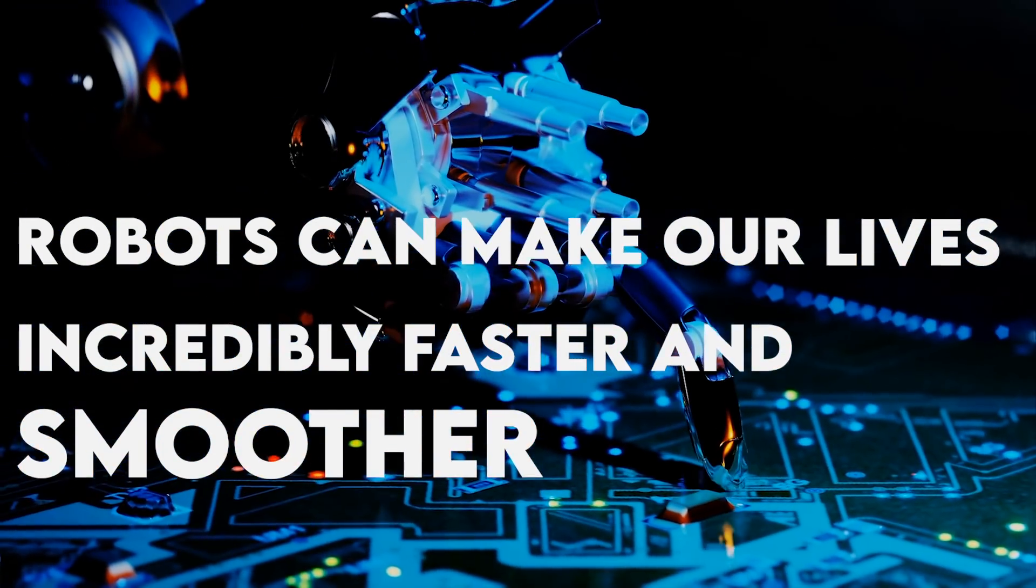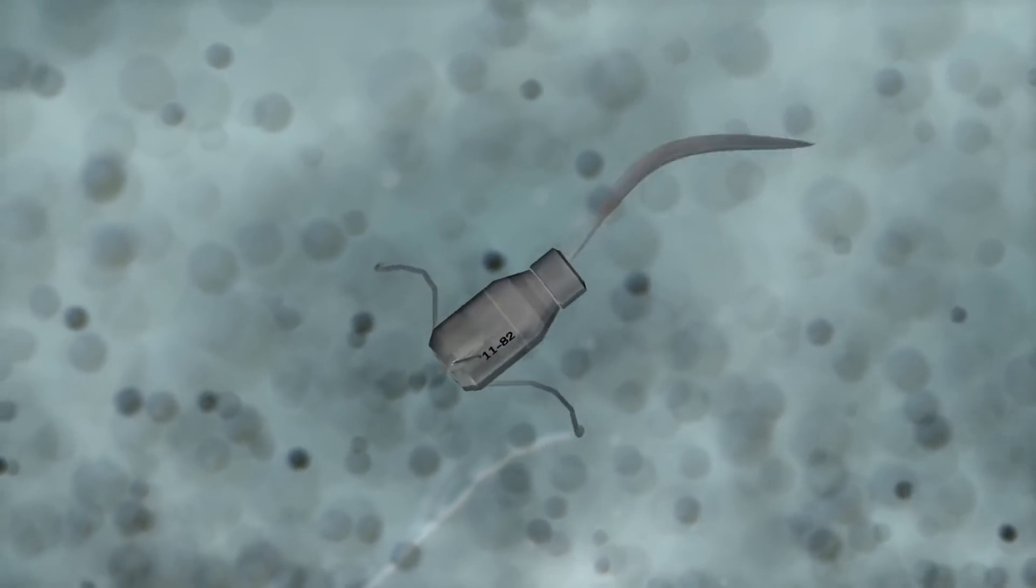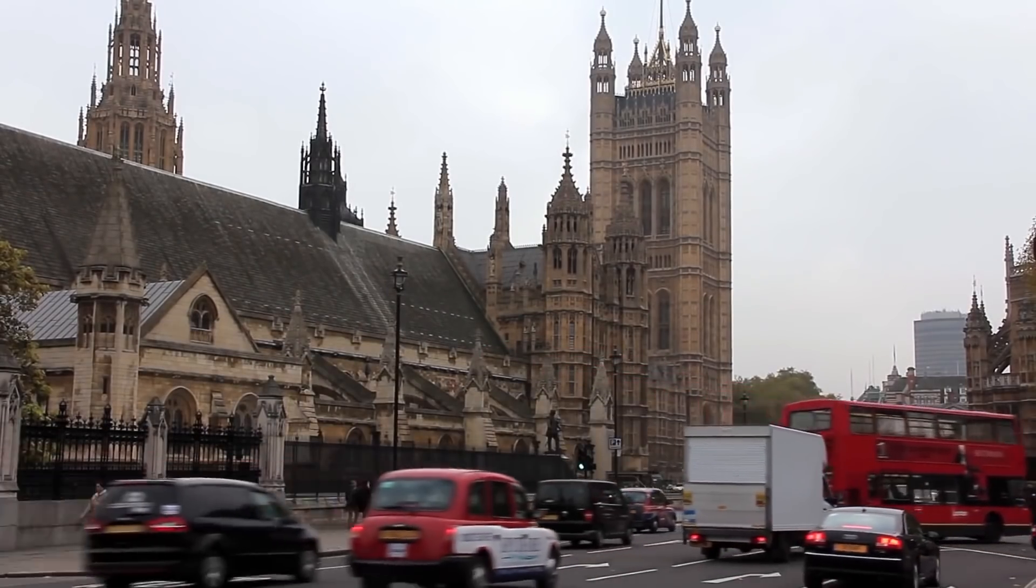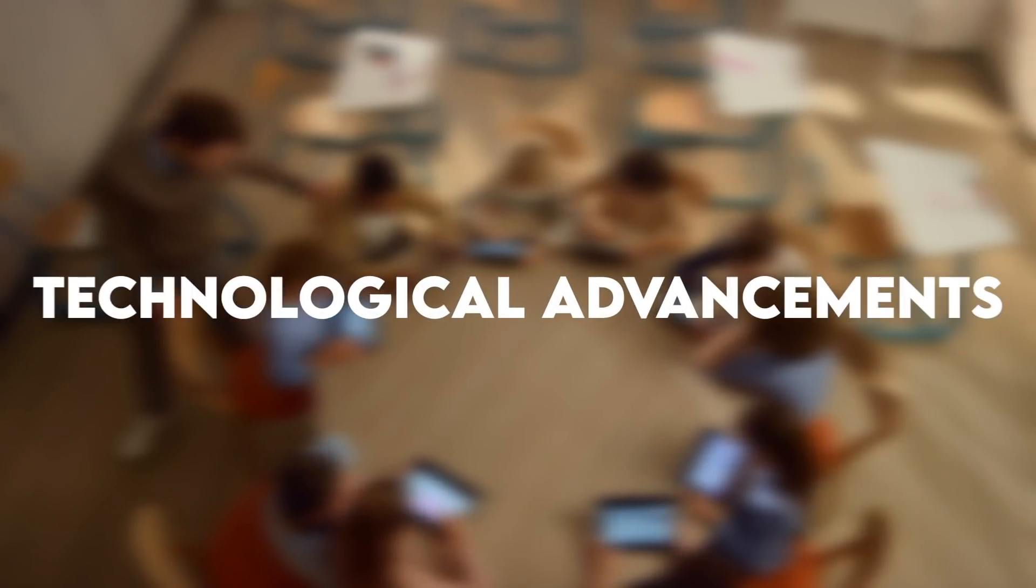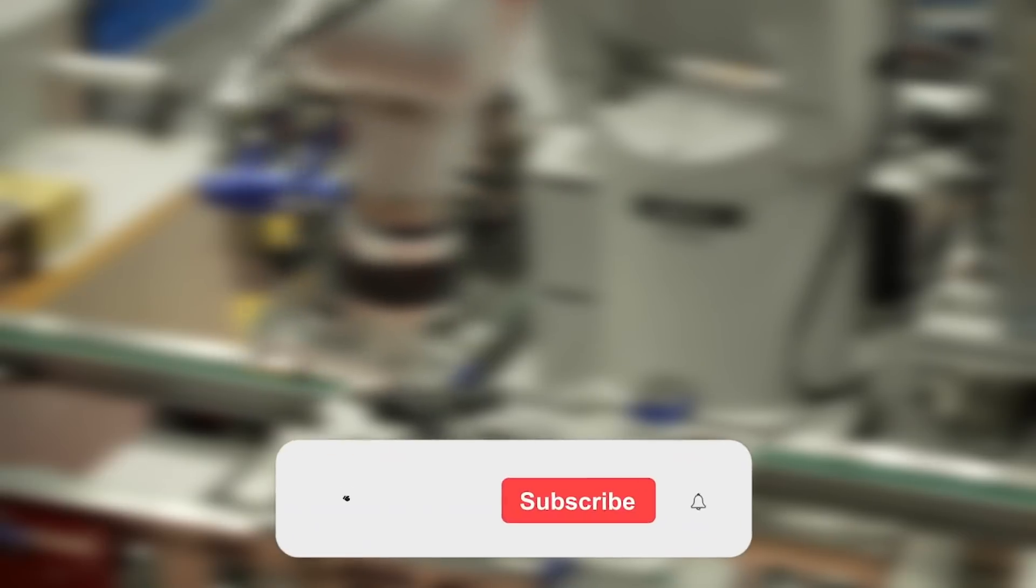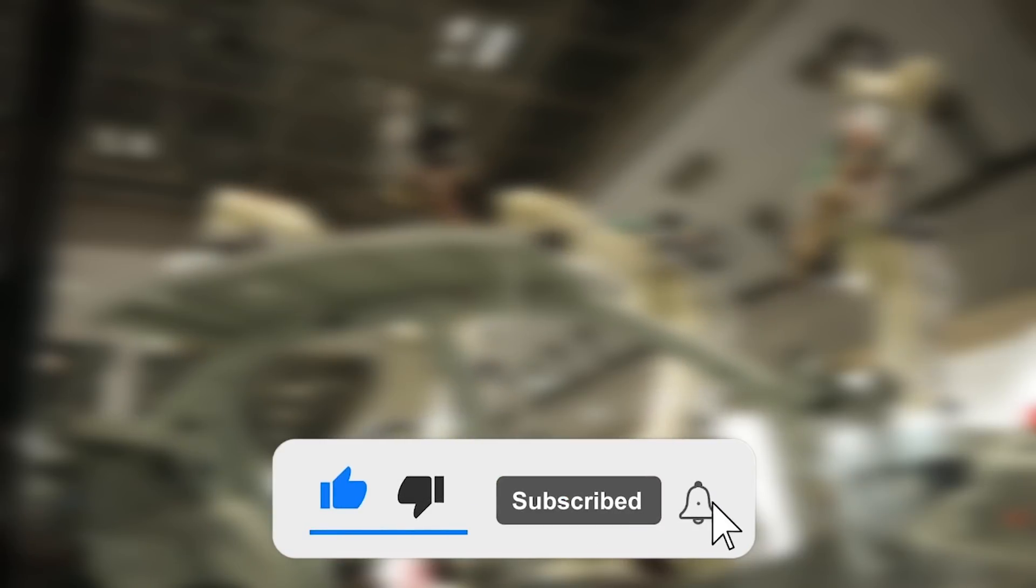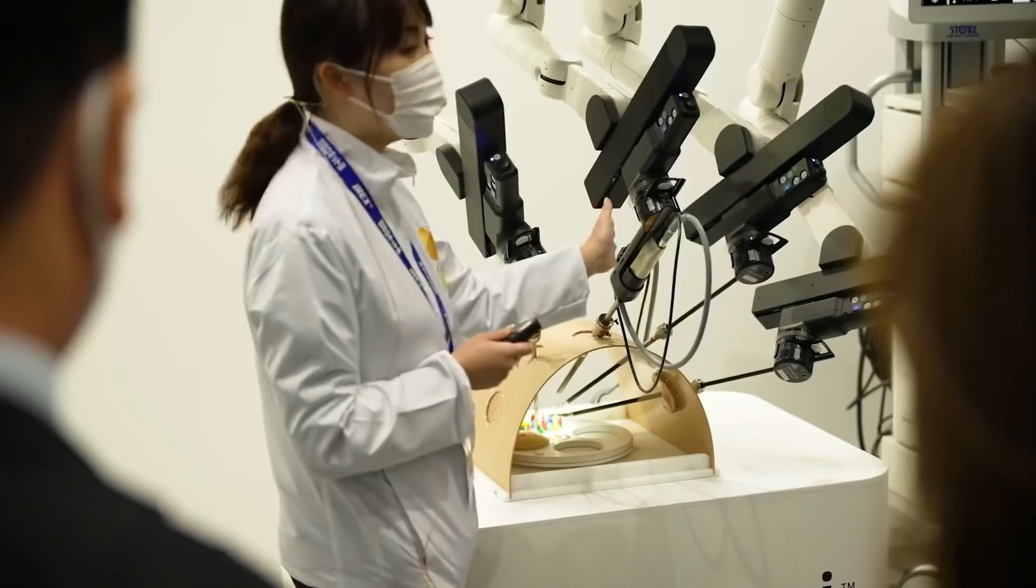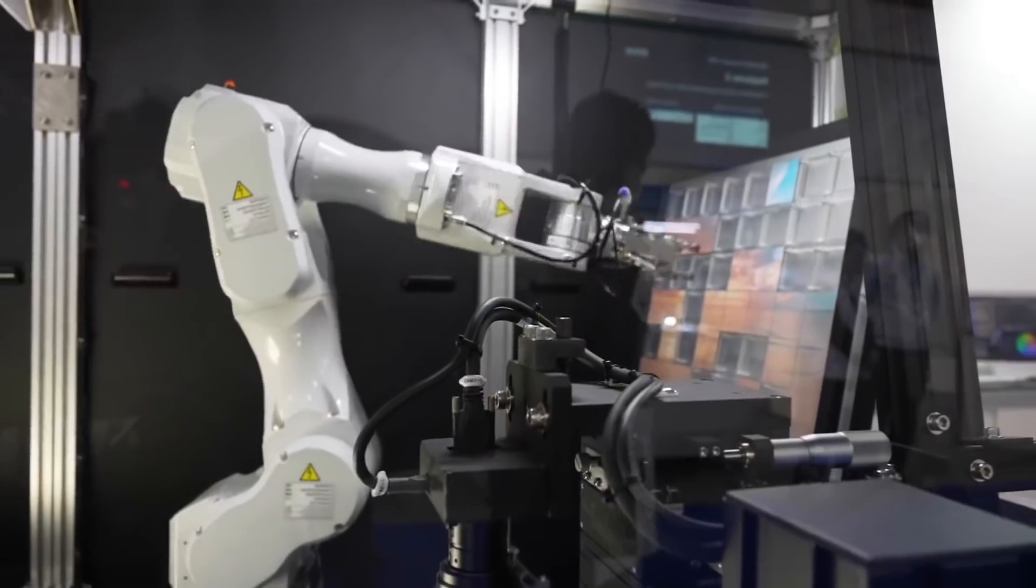Robots can make our lives incredibly faster and smoother. We are approaching that kind of future very soon. Within some years, the world will look like the scenes from the iRobot movie. Don't you think this is an amazing era of scientific breakthroughs we are living in? In this video, we are going to share a glimpse at some latest technological advancements, as we do every week. But before that, don't forget to smash that like button and subscribe if you like what you see. Also be sure to hit that bell icon to ensure that you are notified every time we come out with fresh new content. That being said, let's begin.